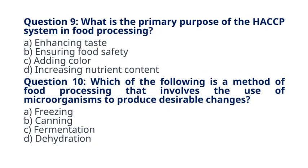Question 9. What is the primary purpose of the HACCP system in food processing? A. Enhancing Taste B. Ensuring Food Safety C. Adding Color D. Increasing Nutrient Content. The correct answer to question 9 is option B. Ensuring Food Safety. Explanation: the Hazard Analysis and Critical Control Points (HACCP) system is a preventive approach to ensure food safety by identifying and controlling potential hazards.